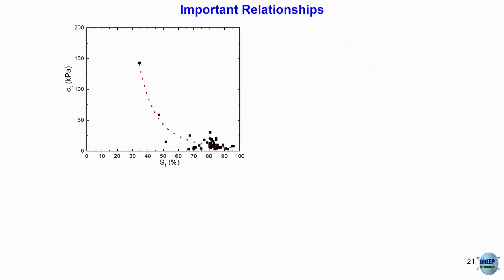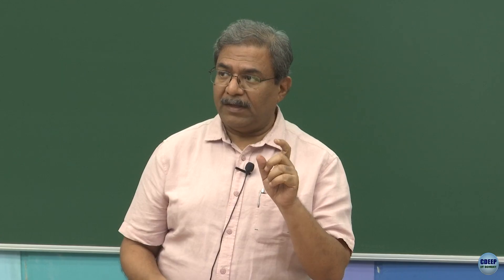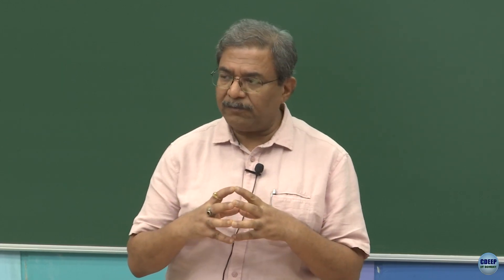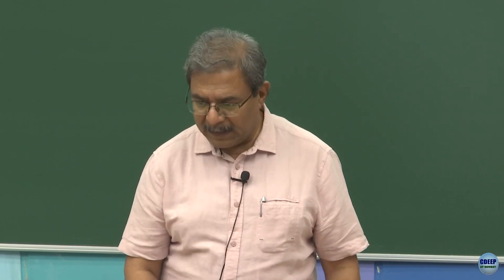Through these studies, we came out with some important relationships: tensile strength as a function of saturation — more the saturation, less the tensile strength; the more drying takes place, the saturation decreases and more tensile strength develops. Also tensile strength as a function of moisture content — L/S (liquid-to-solid ratio, which is moisture content): lesser the moisture content, higher the tensile strength. Simple, logical, sensible relationships could be created for individual minerals. When you come to soils — an agglomeration of different minerals — you will have to integrate all these results to come out with a model, which is going to be a real challenge.